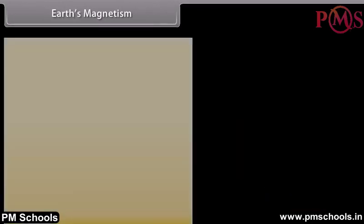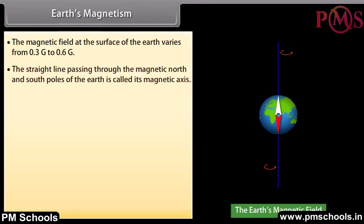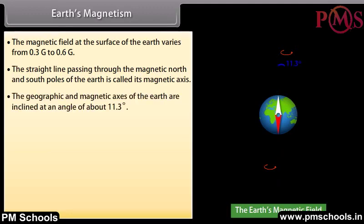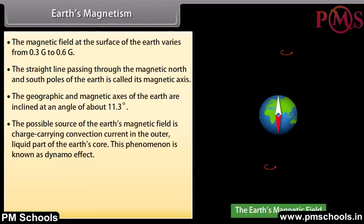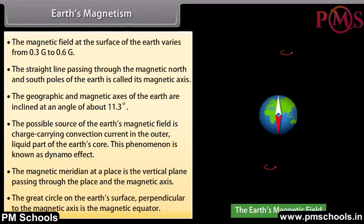Earth's magnetism: The magnetic field at the surface of the Earth varies from 0.3 G to 0.6 G. The straight line passing through the magnetic north and south poles of the Earth is called its magnetic axis. The geographic and magnetic axes of the Earth are inclined at an angle of about 11.3 degrees. The possible source of the Earth's magnetic field is charge-carrying convection current in the outer liquid part of the Earth's core, known as the dynamo effect. The magnetic meridian is the vertical plane passing through a place and the magnetic axis, and the magnetic equator is the great circle perpendicular to the magnetic axis.